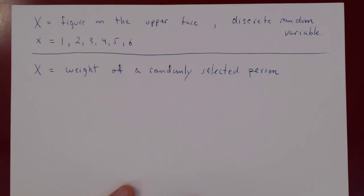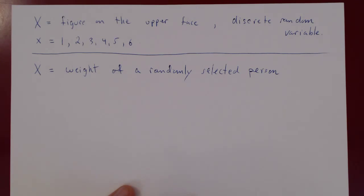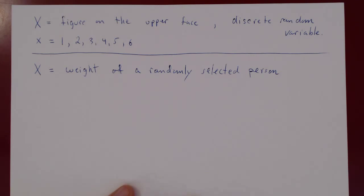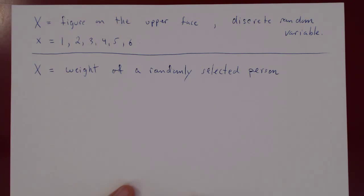This is a random variable because as you choose a different person, you'll most likely get a different weight — and that's the random part. The actual values are numerical: when you take a person at random and weigh them, you have a numerical value.